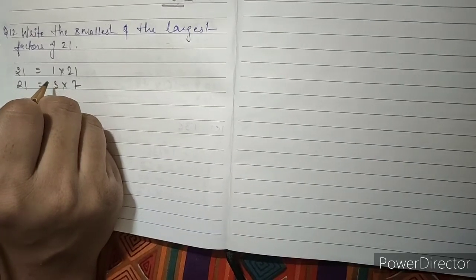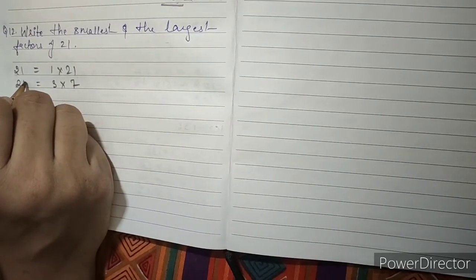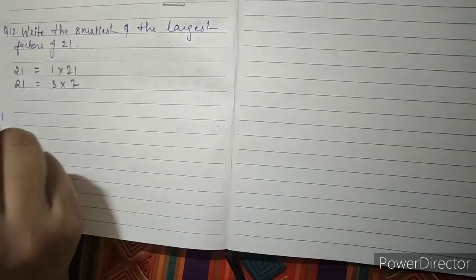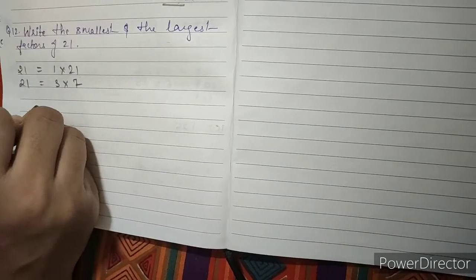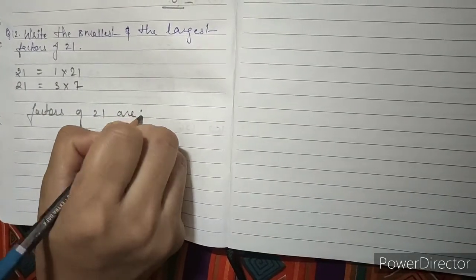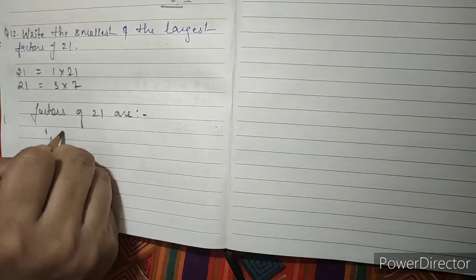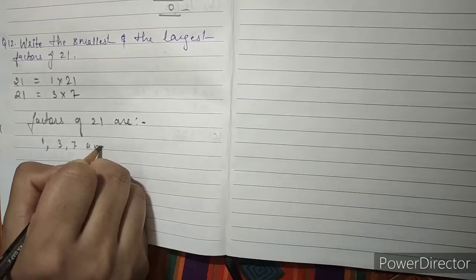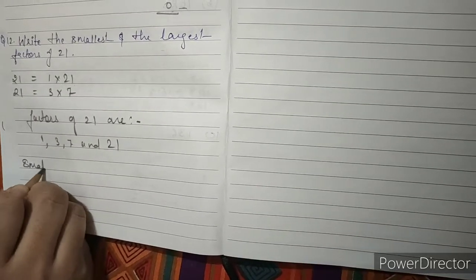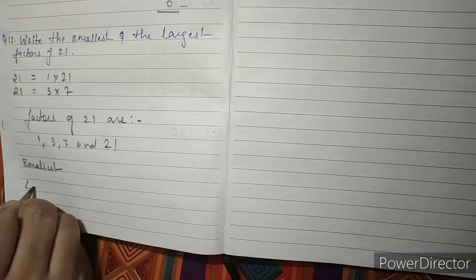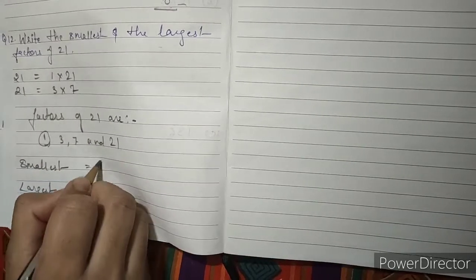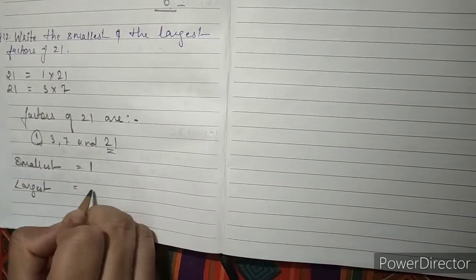21 is not divisible by 2, so we have written 3 times 7. 7 is not a factor other than what's listed. So the factors of 21 are 1, 3, 7 and 21. We have to write the smallest factor and the largest factor.